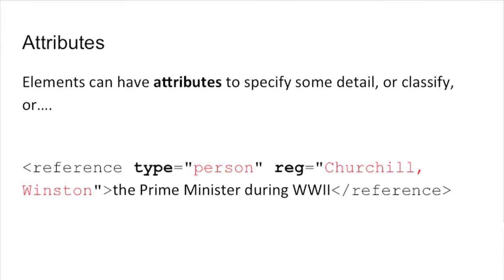The second part of XML is attributes. What is an attribute? It is something that we use to specify something about an element — to classify, to give a detail, to make it more clear. You see here in the example the sentence 'the Prime Minister during World War II.' And if you are an expert on the history of World War II and you know that the context is the United Kingdom, you will know there were two Prime Ministers. You may know which moment of the war we are talking about, and so you may say: I know who it is — it's Winston Churchill. So there you have it: you use the markup to add information to your text, something that you as an expert know and the computer cannot know automatically.